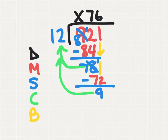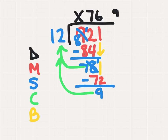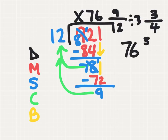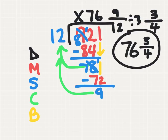In elementary school, you would have simply written 'remainder 9' and been finished. But in middle school, we're not going to use remainders. Your first choice would be to take the remainder of 9 and write it as a numerator, and your divisor of 12 and write it as a denominator. That gives you 76 and 9 twelfths. Since we can simplify 9 twelfths by 3 — 9 divided by 3 is 3, 12 divided by 3 is 4 — our simplified quotient would be 76 and 3 fourths. This is an acceptable middle school answer.